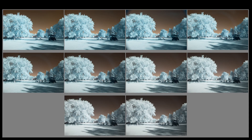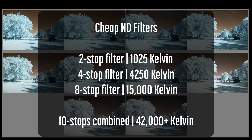Let's move on to color accuracy. For each test image, I applied the same temperature-shifted profile, set a white balance at the same spot in the image, and compared to an unfiltered image. The inexpensive 2-stop ND filter had an average temperature shift of just over 1,000 Kelvin. The inexpensive 4-stop ND filter had an average temperature shift of just over 4,000 Kelvin. The inexpensive 8-stop ND filter had an average temperature shift of 15,000 Kelvin. When combining these filters, the temperature shift was even higher — combining the 8-stop and 2-stop for a claimed 10 stops shifted the temperature from 8,000 Kelvin to 50,000 Kelvin, capping the temperature scale.